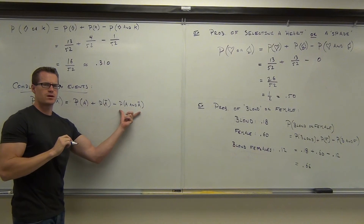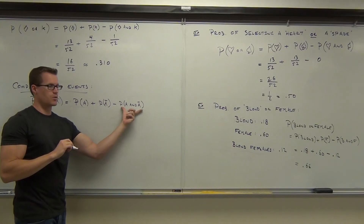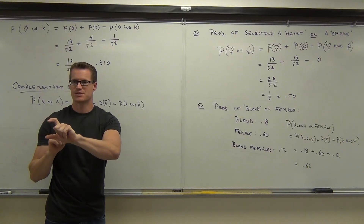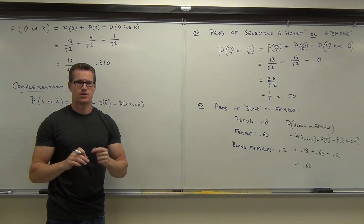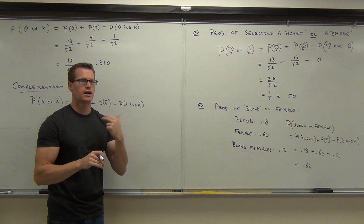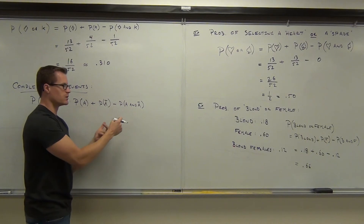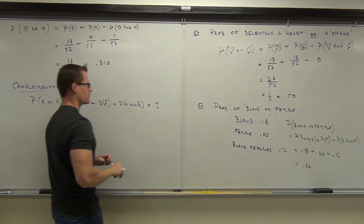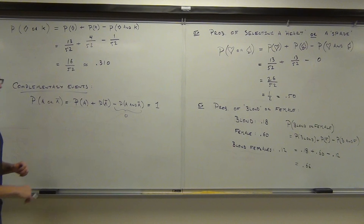What's the probability of A and the complement of A happening at the same time? In other words, what's the probability you can roll a one and a five — or a one and a two, three, four, or six? That's not going to happen. These things, by definition, are mutually exclusive. They do not happen at the same time — that's how complements are defined. This probability is equal to zero.